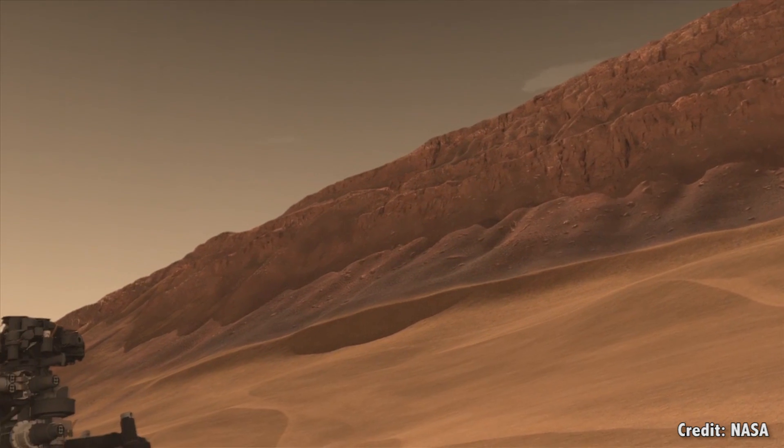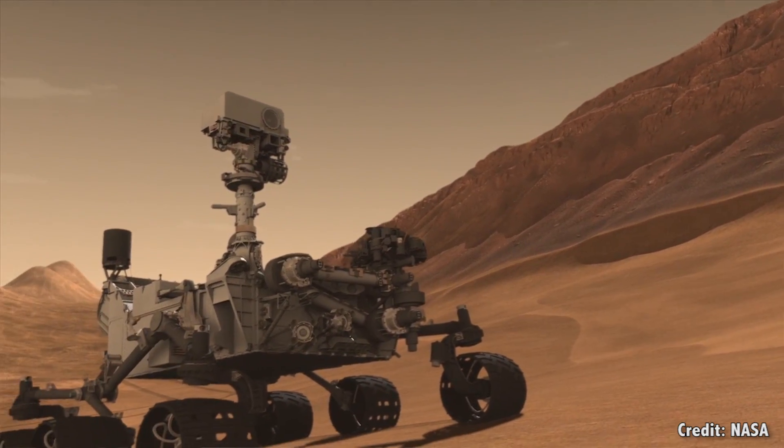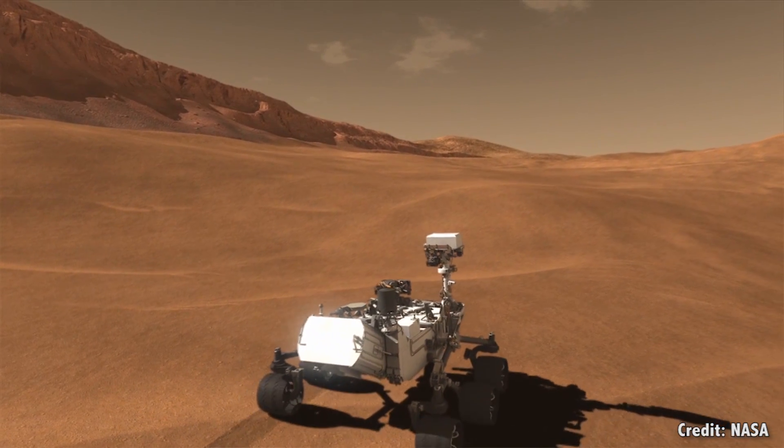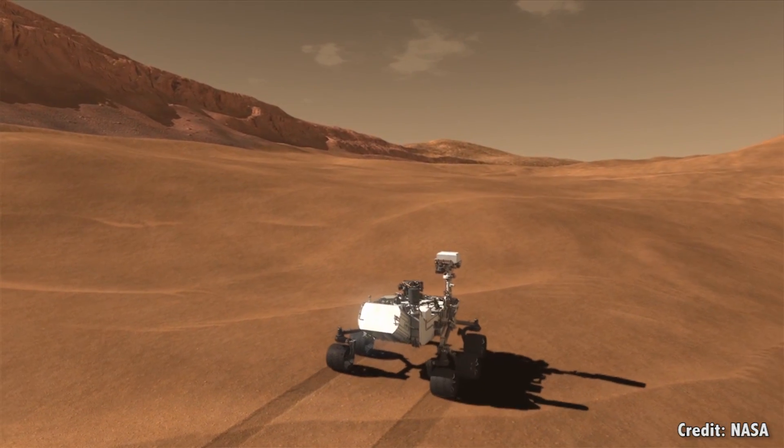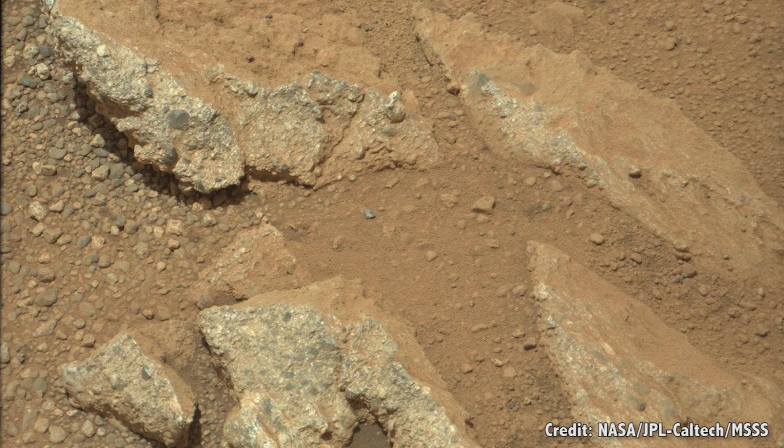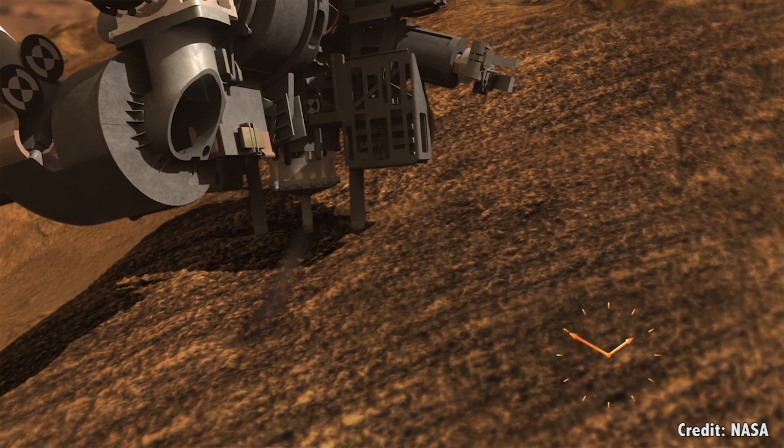NASA's Curiosity rover took this analysis to the next level, arriving in 2012 and searching for evidence that water had been on Mars for vast periods of time, long enough for Martian life to evolve. Once again, Curiosity found multiple lines of evidence that water acted on the surface of Mars. It found an ancient stream bed near its landing site, and drilled into rock that showed the region was habitable for long periods of time.